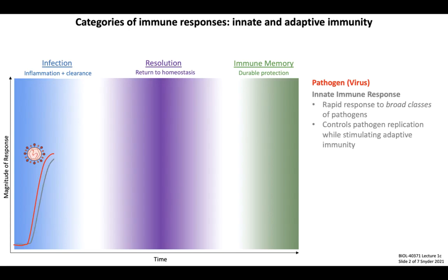During the infection phase with a pathogen — for our model here, I'm using a virus in red — as a pathogen replicates, it first triggers a rapid inflammatory response mediated by innate immunity, depicted by the gray line in this figure. The cells and pathways of innate immunity are activated in response to broad classes of pathogens. In this example, these responses would be specific signaling modules engaged by most types of infection by any of a number of different species of virus.